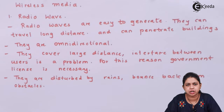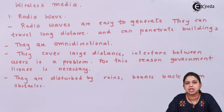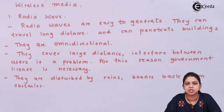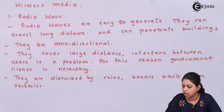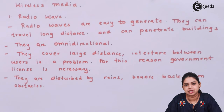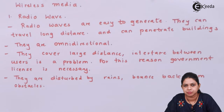Radio waves are easy to generate and omnidirectional, meaning they can travel in all directions and can easily penetrate through a building. For that reason we need a government license to carry radio waves. They are also disturbed by environmental conditions such as rain, and they bounce back from obstacles.